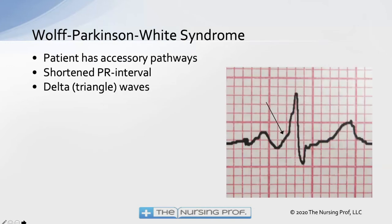Another dysrhythmia the AACN wants you to know about is Wolff-Parkinson-White syndrome. This happens in patients who usually are born with accessory pathways — rather than just having the normal conduction pathways through the heart, these patients have accessory pathways that also allow impulses to travel down separate routes from the normal ones.